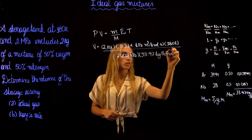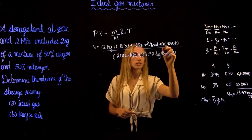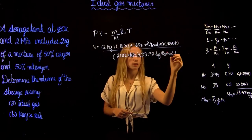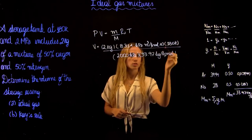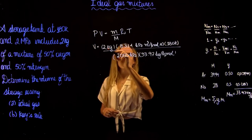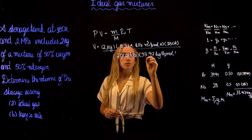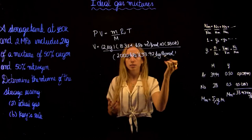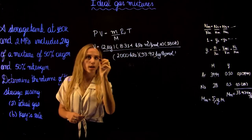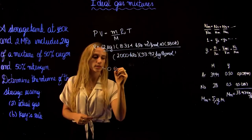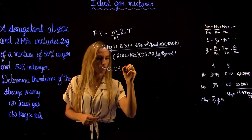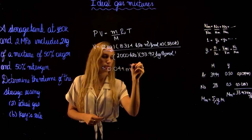Checking units: kelvins cancel, kmol cancels, and kilograms and kilopascals cancel — confirming the units are correct. We find a volume of 0.044 meters cubed. This is the ideal gas volume.